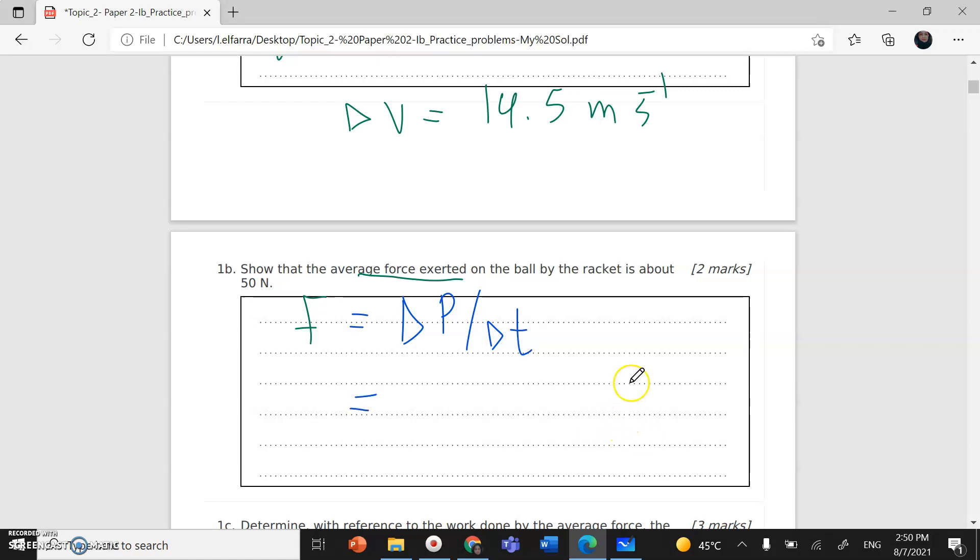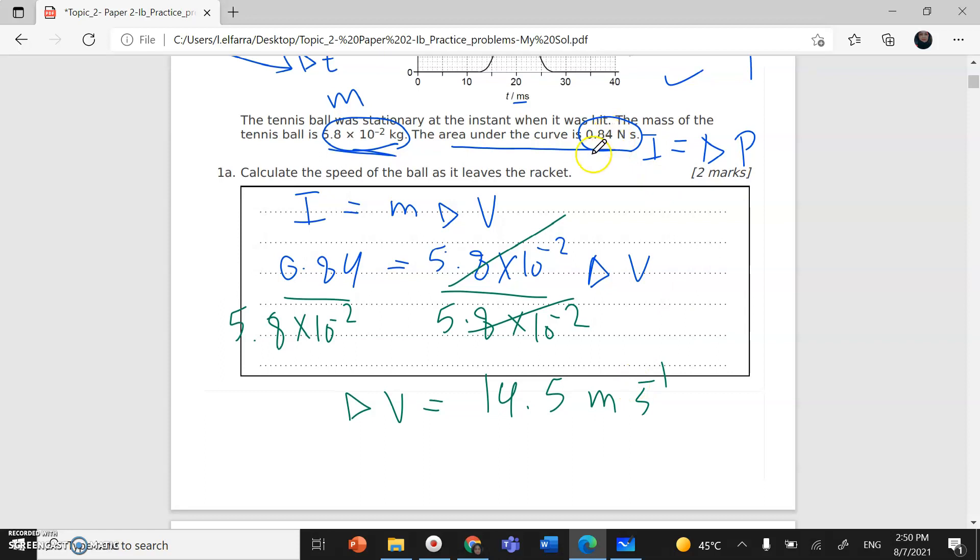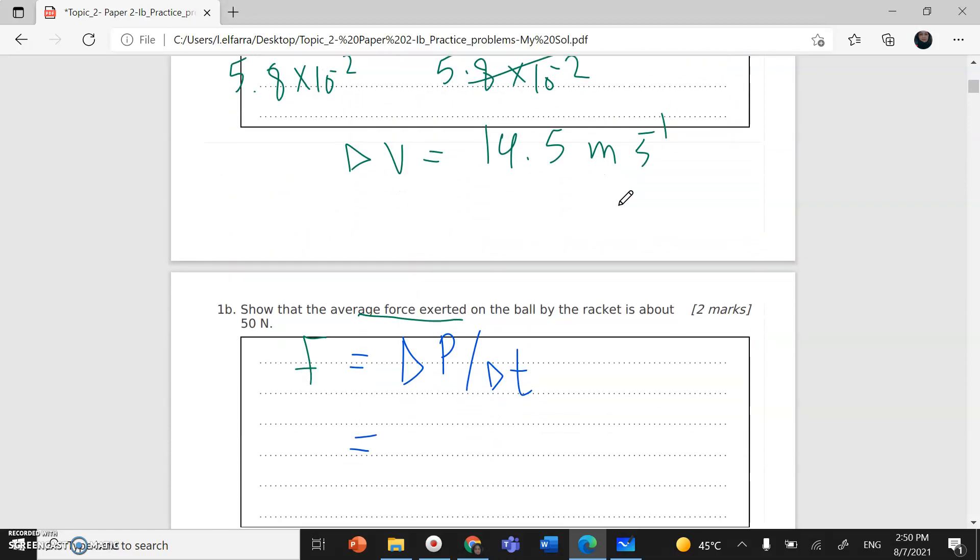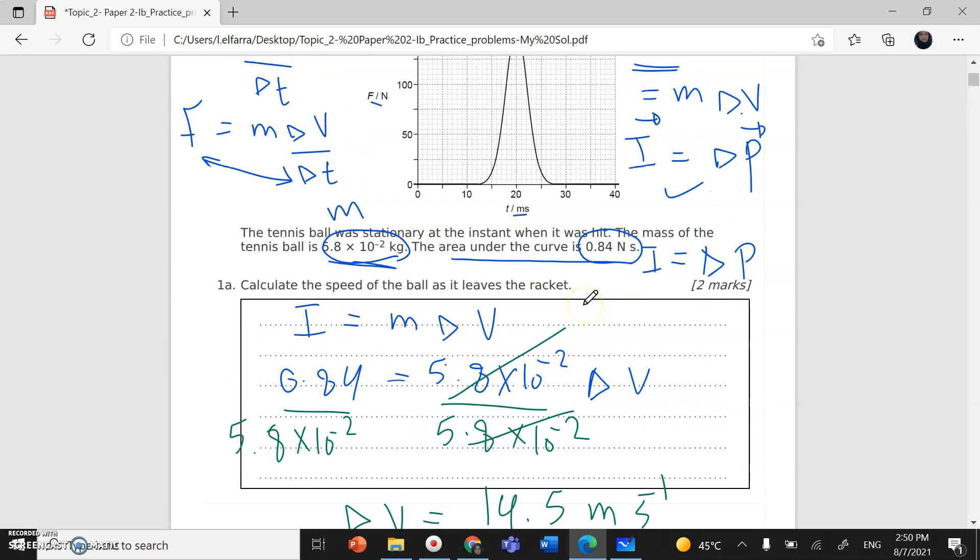Change in momentum is the impulse, which is 0.84, so this will give me 0.84. Now for time, I should go to the graph.